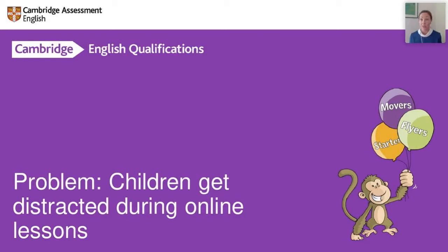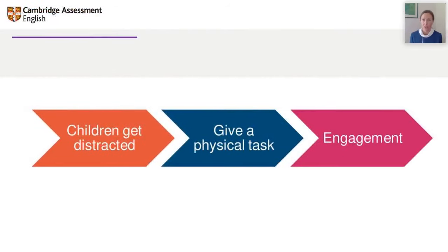Let's move on to our second issue. This was a big one — 32% of you said children are getting distracted in online lessons. They're learning in a new environment; they're at home. Maybe they're in a bedroom with their toys, there's noise, siblings are there, parents are there — lots of things to get distracted by. And they're not used to focusing on the screen. So what can we do? One idea is giving them a physical task, changing the pace, and bringing them back to you — just as you might in a face-to-face class.